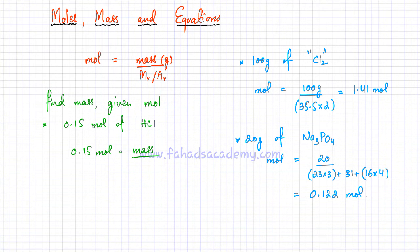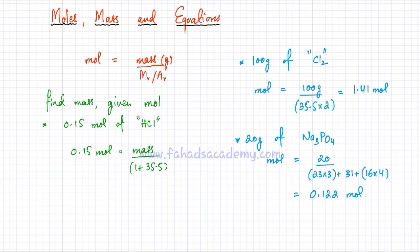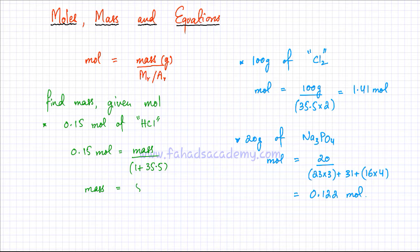The Mr of HCl is H plus Cl: 1 plus 35.5 equals 36.5. Making mass the subject of the equation, mass equals 36.5 multiplied by 0.15, which gives 5.475 grams. That's how you figure out the mass of a substance.